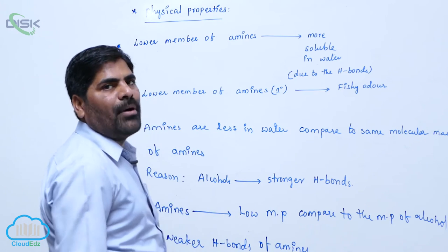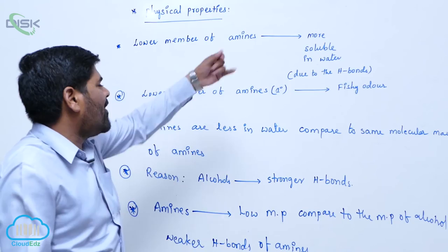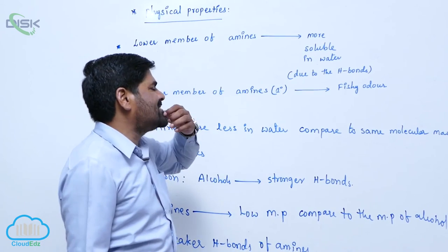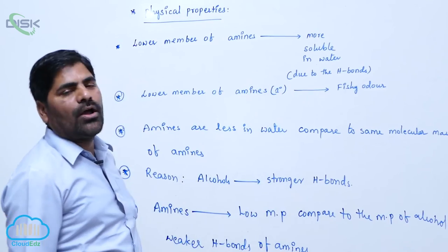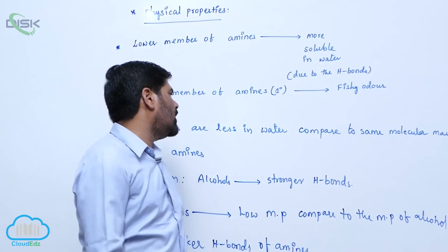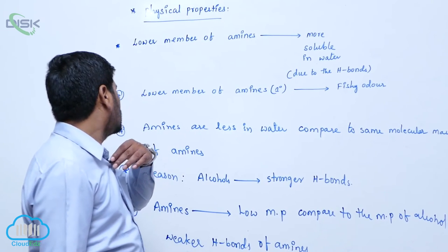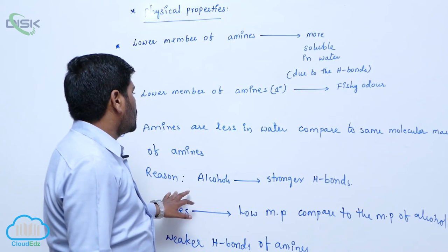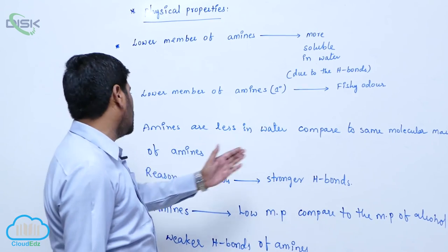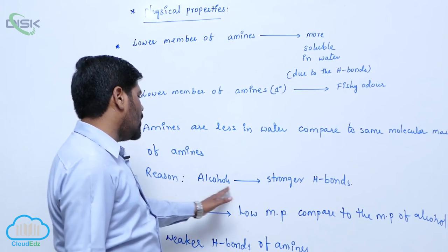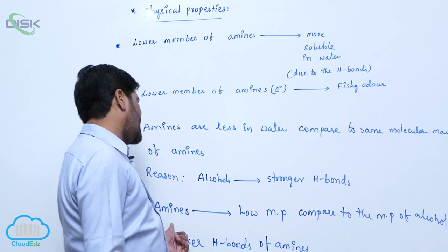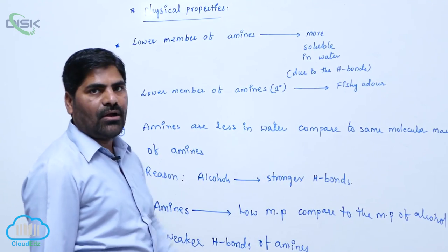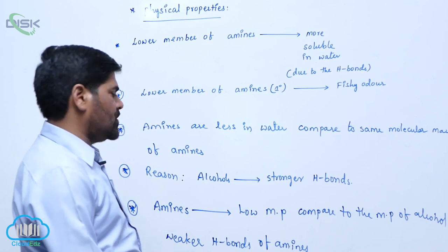To summarize: lower members of amines are more soluble in water due to the formation of hydrogen bonds. Lower members of amines, generally primary amines, show a fishy odor. Amines are less soluble when compared to alcohols of the same molecular mass. The reason is alcohol forms stronger hydrogen bonds. Amines also have a lower boiling point compared to alcohols, because of weaker hydrogen bonds.